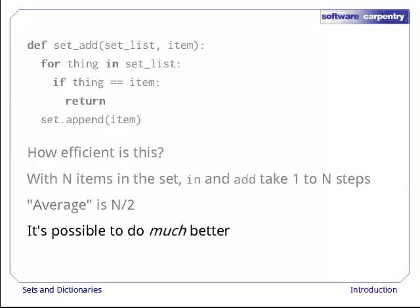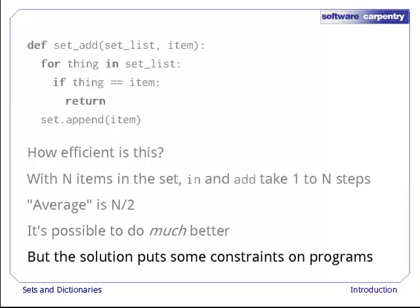If we change the way we store sets, we can do a lot better. In fact, we can get the time down to a constant no matter how big the set is. But to get this speed up, we have to accept a few constraints on our program.